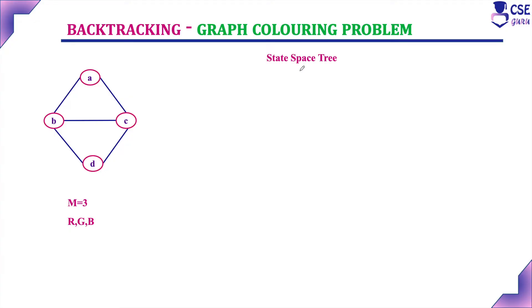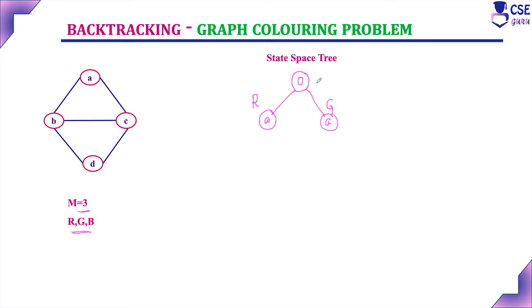We have already discussed one example to implement graph coloring problem, and this is the second example. The state space tree will start with the initial state, which we will consider as 0 — the root of the state space tree. They have given 3 colors: M is equal to 3 — red, green, and blue. For vertex A, I can assign red, green, or blue.